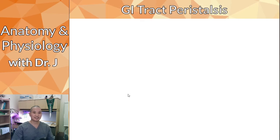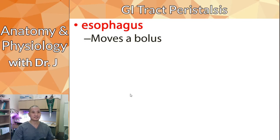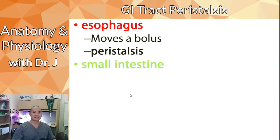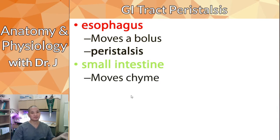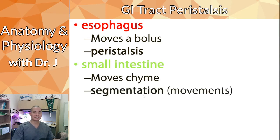The GI tract has peristalsis — we know the esophagus does peristalsis and moves the bolus — but in the small intestines it does a special form of peristalsis. The small intestine moves that mixture of food and gastric acid we call chyme.